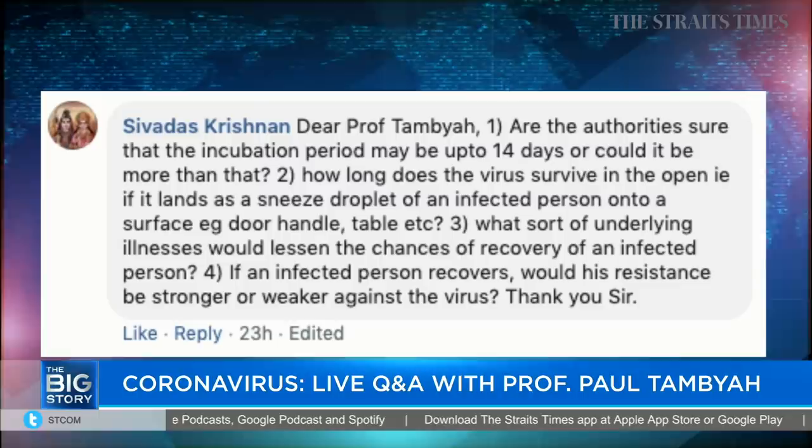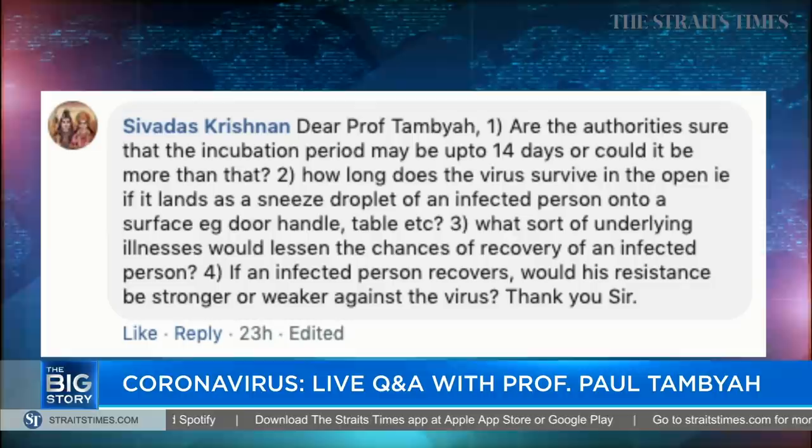Reader Sivadas Krishna asks what underlying illnesses would lessen the chances of recovery. We have some information from China, with a couple of publications in major medical journals. The first patient who died had liver disease — liver tumours. Liver disease and diabetes are among the underlying conditions that have predisposed people to more severe disease.